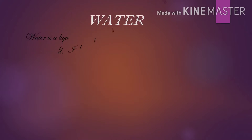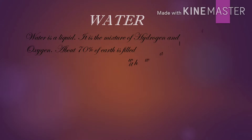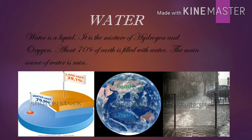Now let us look at the definition of water. What is water? Water is a liquid. It is a mixture of hydrogen and oxygen. About 70 percent of the earth is filled with water. The main source of water is rain. Like air, human beings, animals, and plants all need water to stay alive. Water contains dissolved oxygen, hydrogen, salts, minerals, and other impurities.